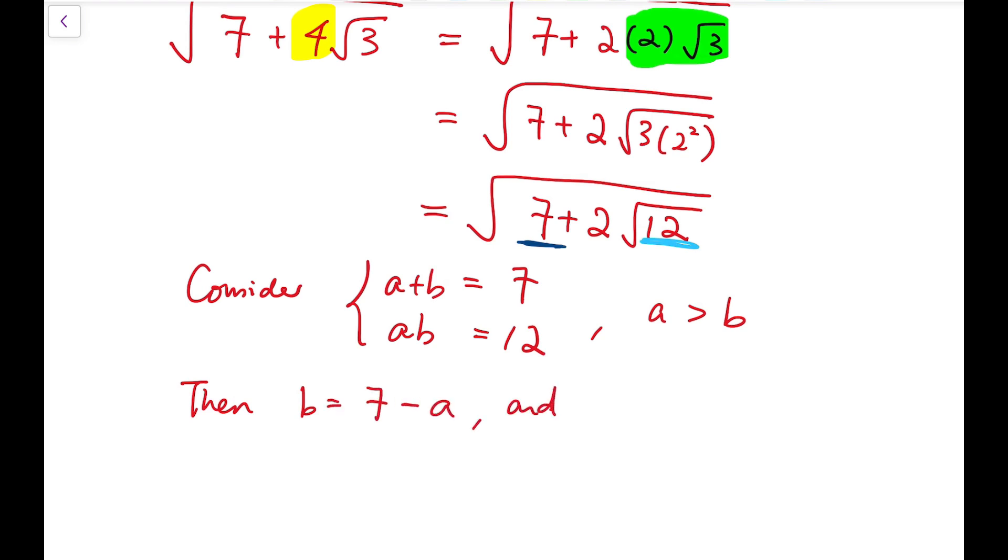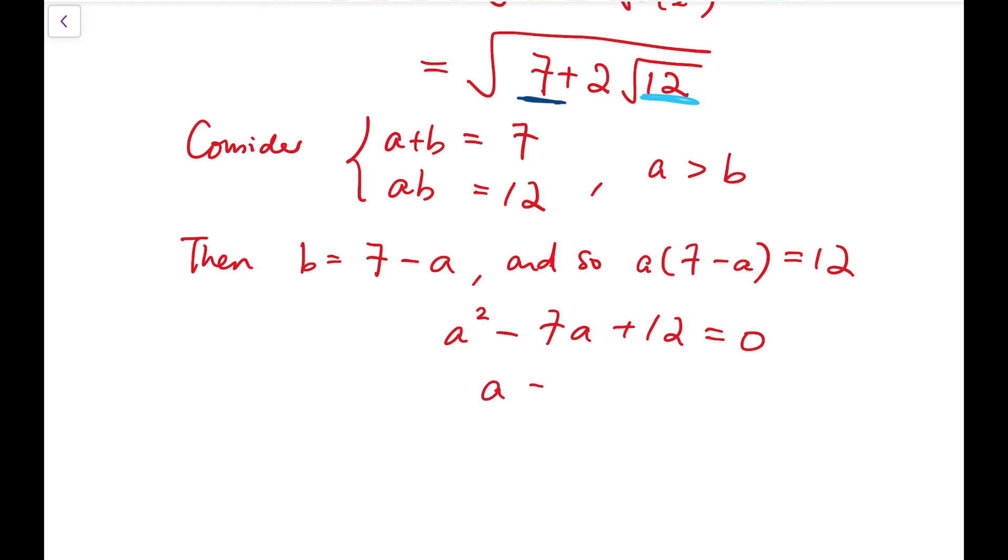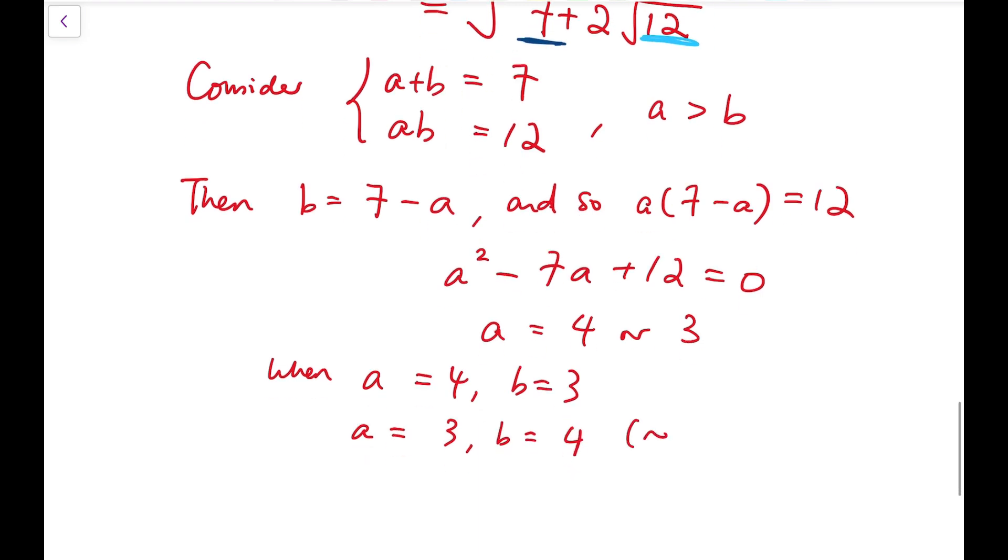Now again, we can solve for this system very quickly. b equals 7 minus a, and so a times this expression equals 12. Simplifying, we will have a squared minus 7a plus 12 equals 0. So that means a is equal to either 4 or 3. Of course, we want a to be a larger one. So when a is 3 then b is 4. Now we have to reject this. So this is the one that we want.